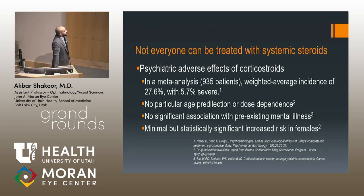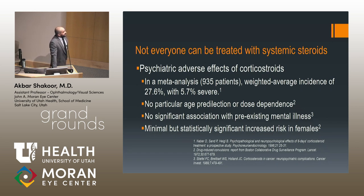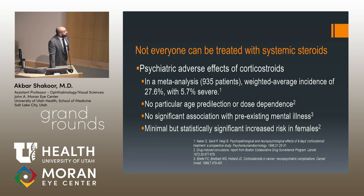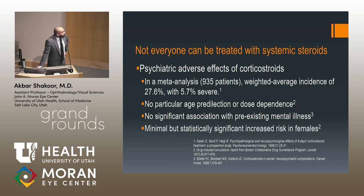Not everybody can be treated with systemic steroids. In a meta-analysis of 935 patients, the rate of psychiatric complaints on steroids — ranging from anxiety and agitation to psychosis — is 27.6%, with 5.7% being severe, including hallucinations and suicidal ideation. There is no particular age predilection or dose dependence for these side effects, and no significant association with pre-existing mental illness, though there is a minimal but statistically significant increased risk in women of severe steroid-associated psychiatric side effects.